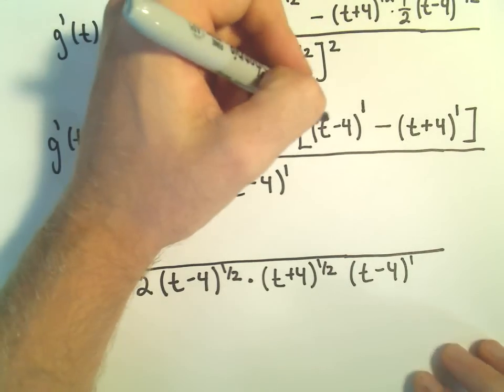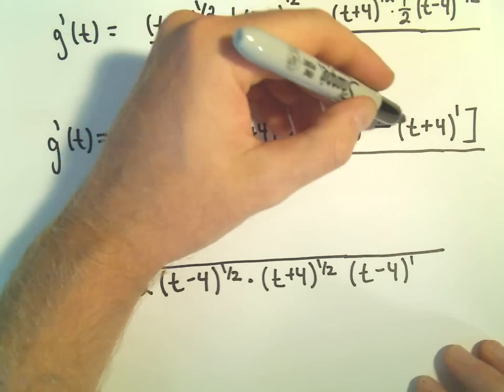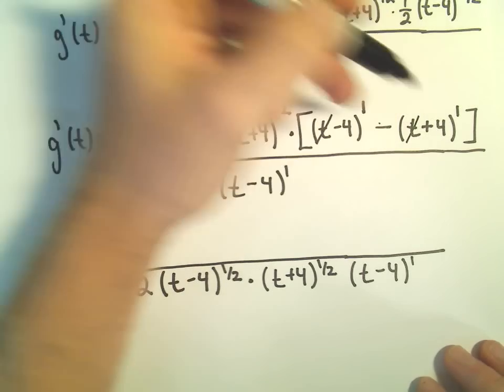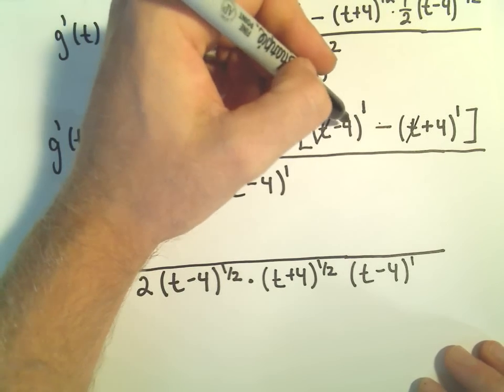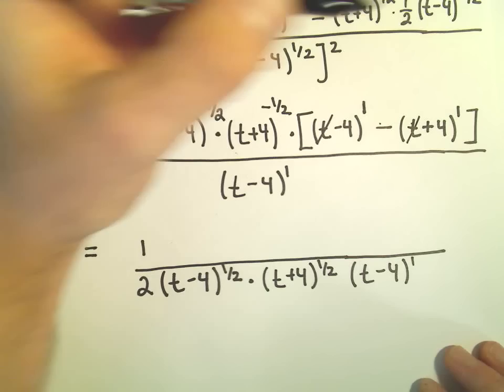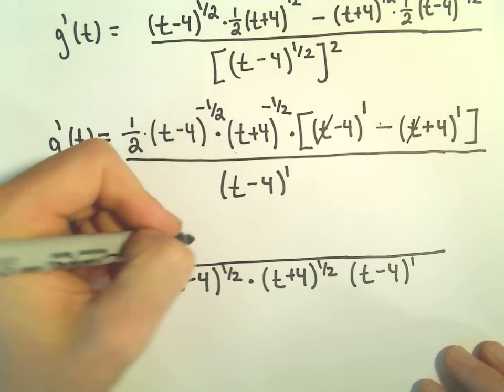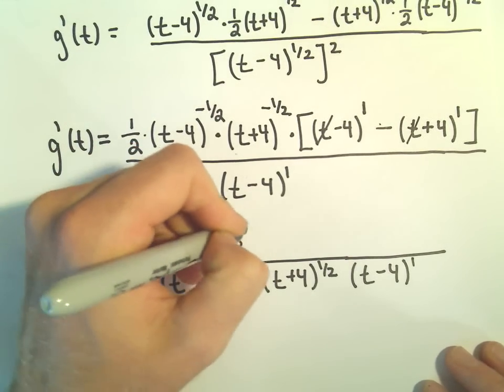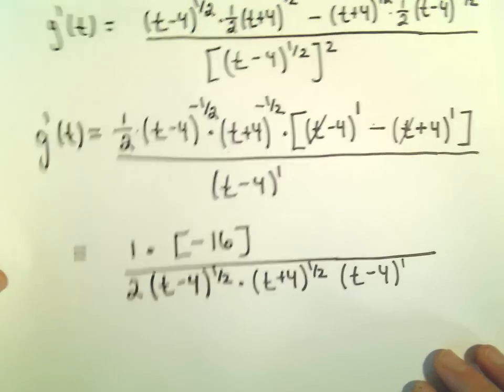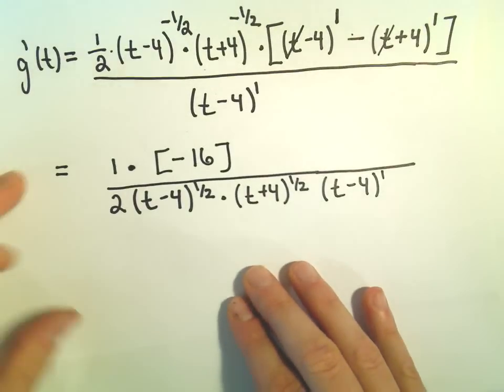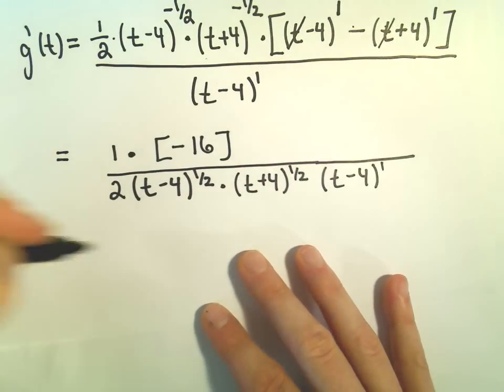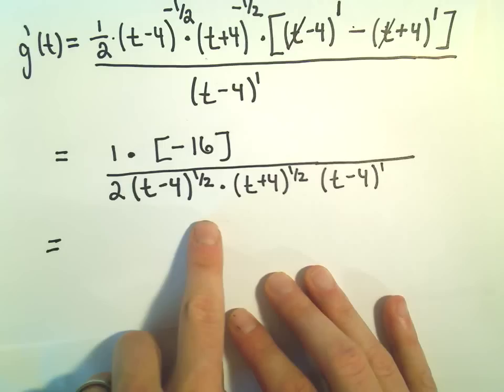And now we can simplify what's left over inside the brackets. So notice what's going to happen here. It looks to me like we're going to get a t minus t, so that would just cancel. And then we would have negative 4 minus 4. Well, negative 4 minus 4 is going to leave us with negative 16. So now we're getting pretty close. We almost have this simplified really nicely.